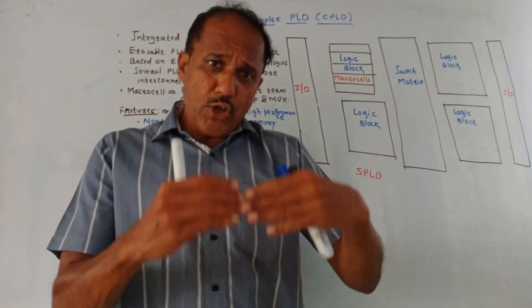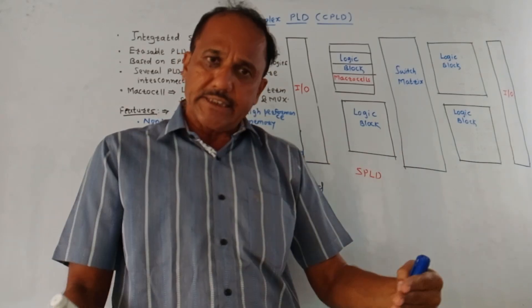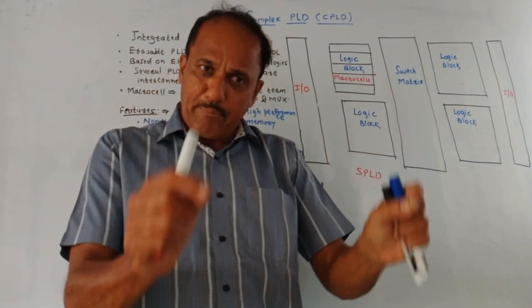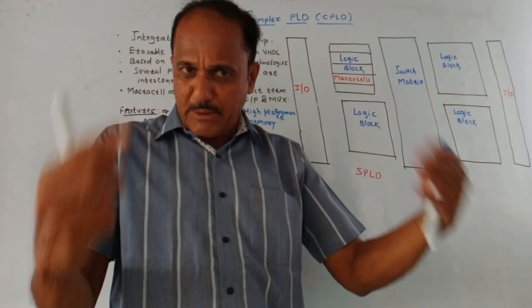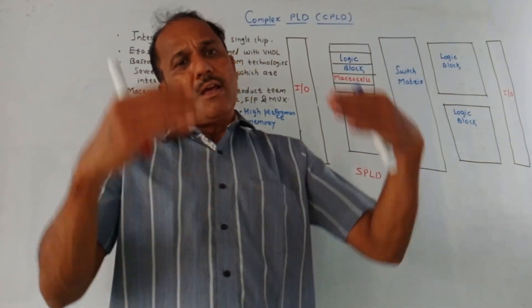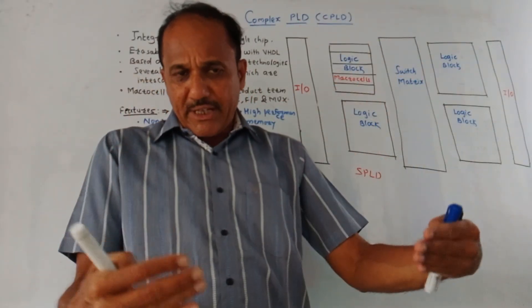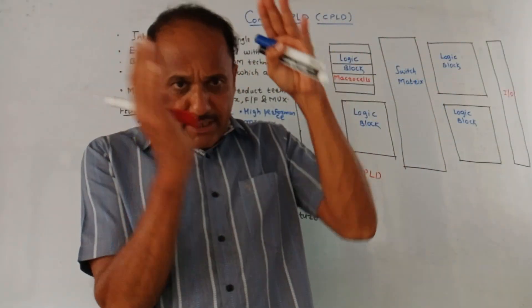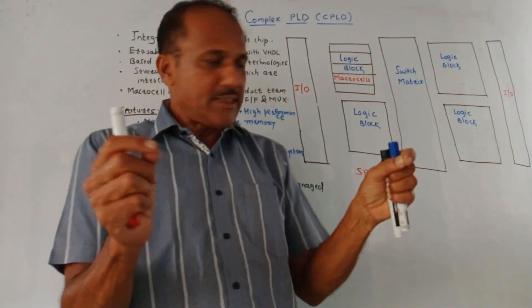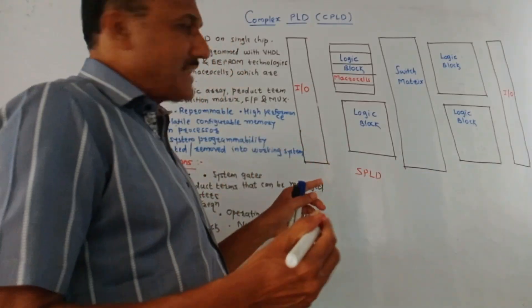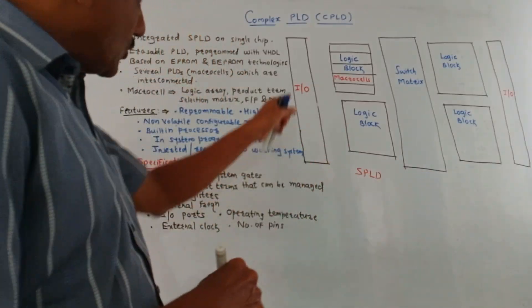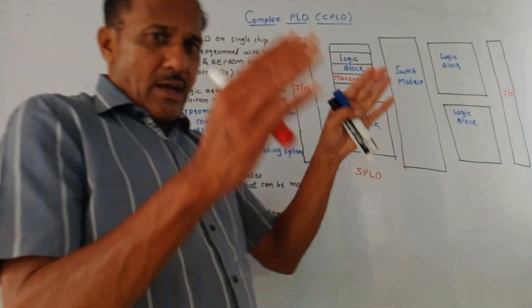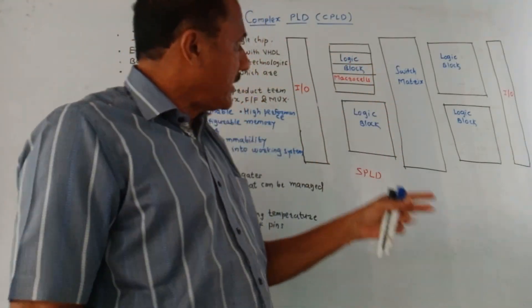Before that, as I mentioned, we have already discussed the necessity of PLDs. Same things are applicable for CPLDs. In complicated applications, it is required to have many logical devices in a single chip — that is CPLD, Complex PLD. So this is the architectural diagram of CPLD; I have drawn a simplified version.